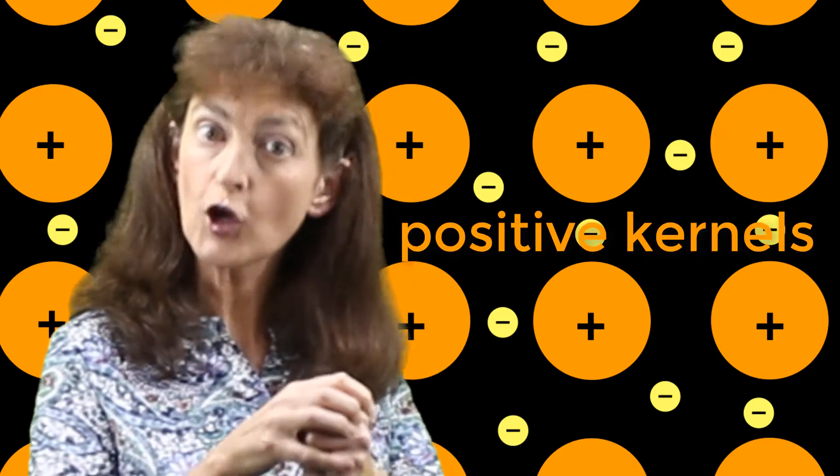Now what's left over when a metal has donated its valence electrons? A positive kernel. It's positive because there are more protons in it than electrons, because the valence electrons have left.